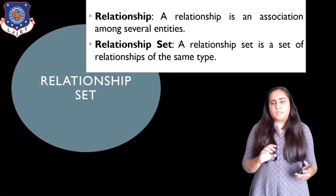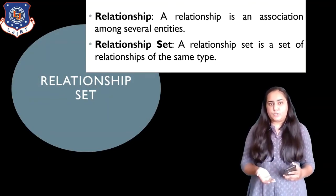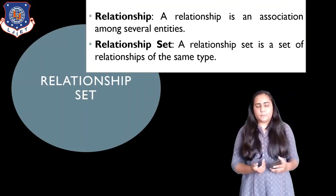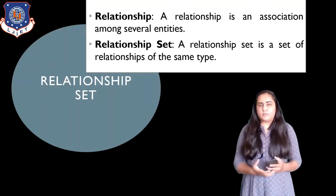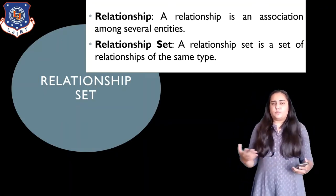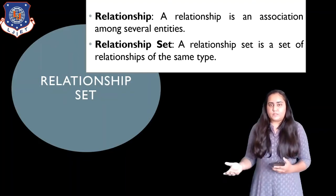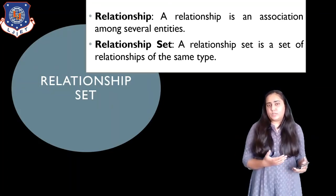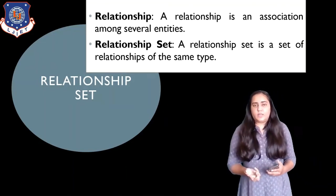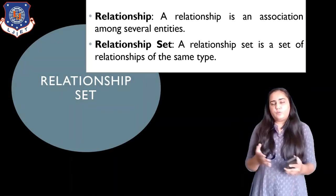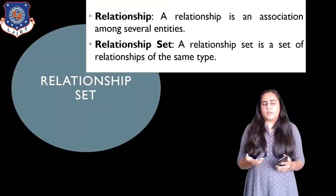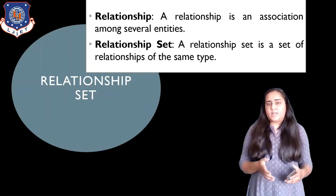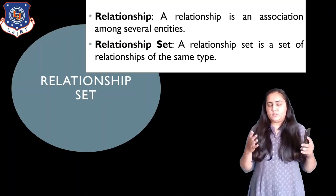The R in the ER model stands for relationship set. A relationship is an association between several entities. For example, there's a student and a professor, and you want to relate them by saying that this professor teaches the student — that's a relationship between the professor and the student. A relationship set is a set of such relationships. In a relational model, you would create a table for students, a table for professors, and then another table showing which student is being taught by which professor — that table would be a relationship set.